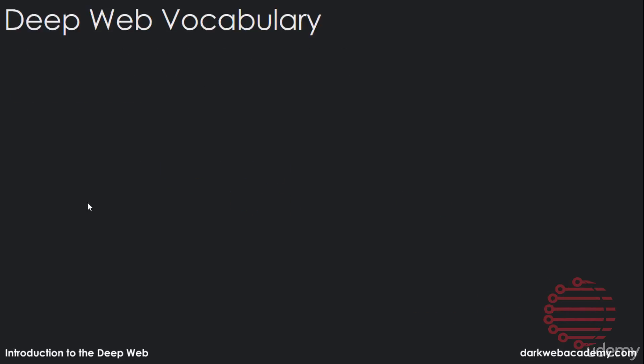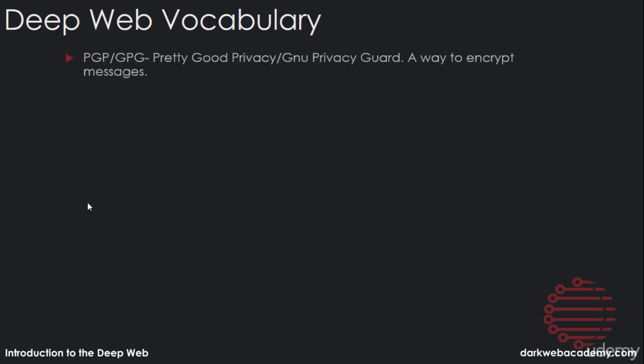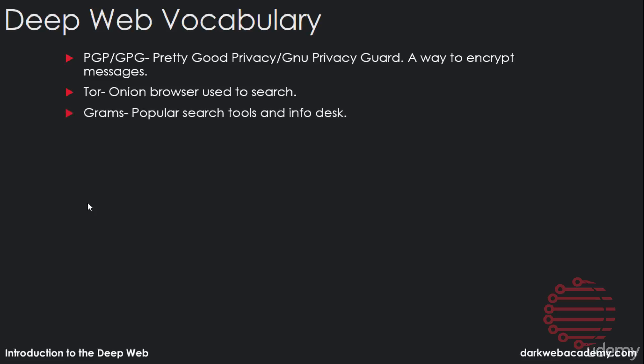One of the first things you should be comfortable with is PGP. PGP stands for Pretty Good Privacy and it's a way to encrypt messages on the dark web. You then have Tor, which was the onion browser we used to search the dark web. And one thing we didn't really talk about is Grams — Grams is a compilation of some popular search tools and an info desk to give information about vendors on dark net markets.